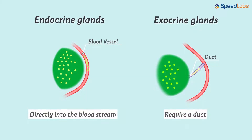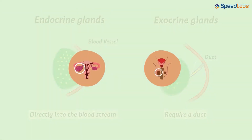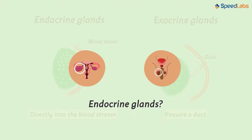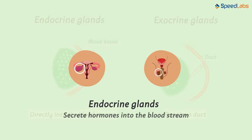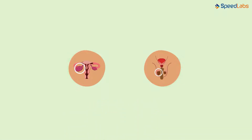So are we saying that the testes and the ovaries are endocrine? Do they not require ducts for secreting the hormones? No, they don't. They secrete the hormones directly into the bloodstream. Now let us get back to know how these hormones work.